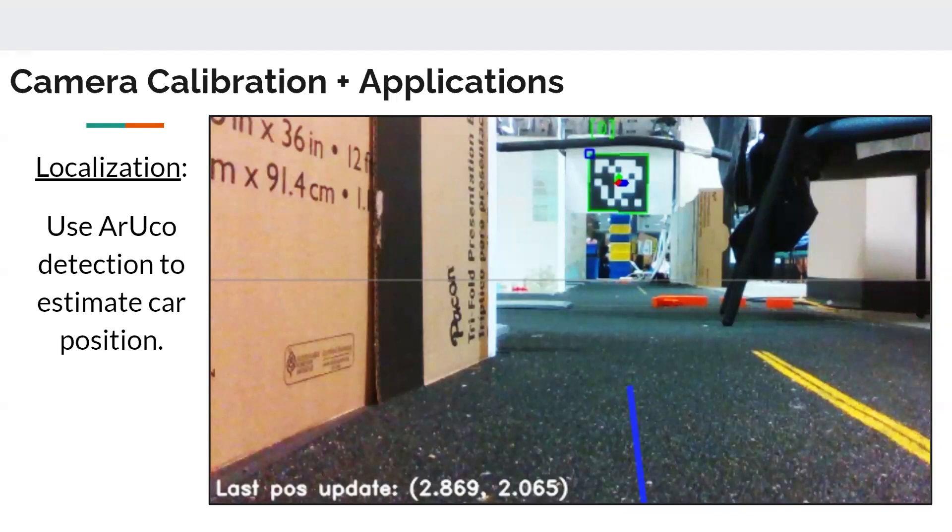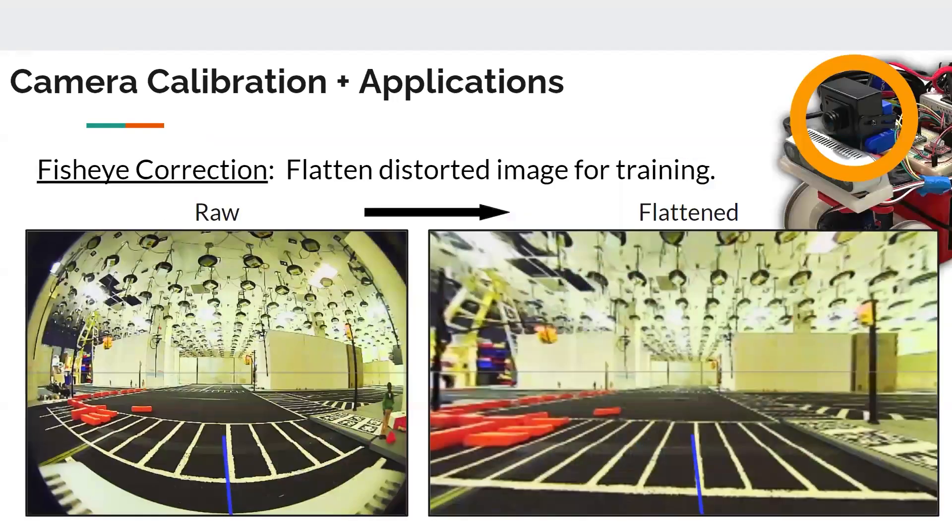So we detect it and we're able to update the global position of the car using the system coordinates of the city. Calibration also allows us to undistort the raw image from our new fisheye camera and turn it into a flattened one more suitable for our training.